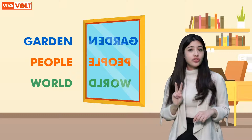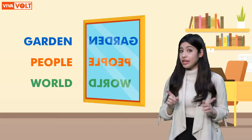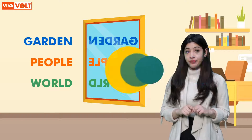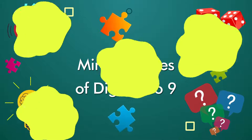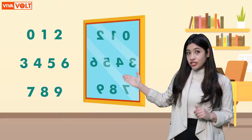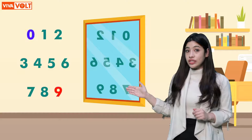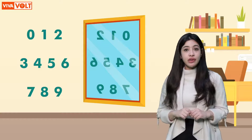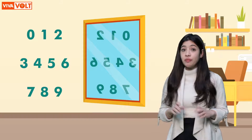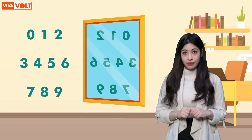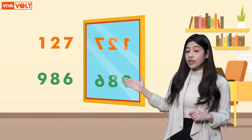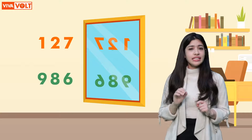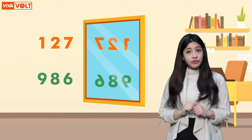Similarly, take any two words of your choice and make their mirror images. Here are the mirror images of digits 0 to 9. Using these mirror images, we can form images of any given number. The mirror image of 127 and 986 is as shown here. Write any two numbers and form their mirror images.